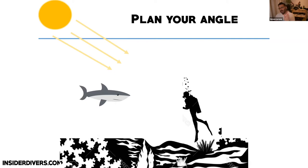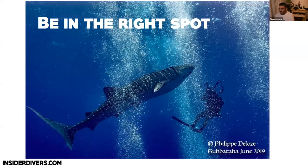Once you've decided on your angle and set your light, anticipate where the animal will be. Set your camera and strobe to be facing the animal when it comes. That means when it swims around you to the other side, you can't keep following — you have to commit to one direction. I often get feedback that I always seem to be in the right spot; that's partly experience, but mostly because I swim a lot to anticipate where the animal is going.